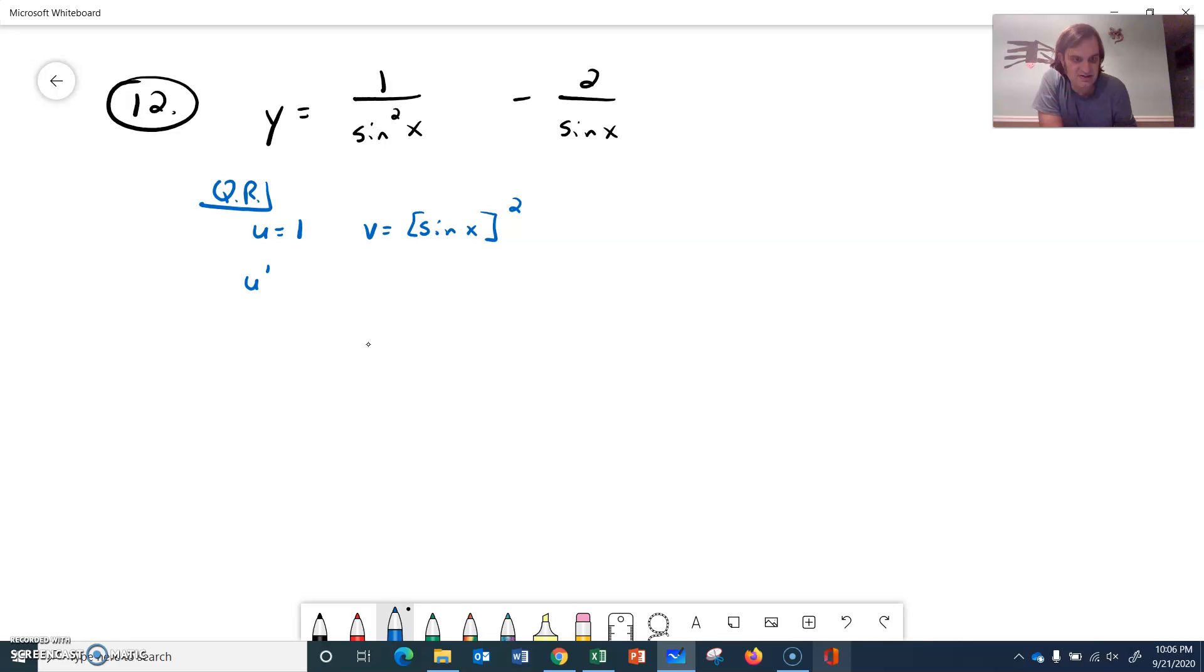But the derivative of 1, of course, is 0. And then the v prime here, we're using the chain rule. So I'll put that in here, chain rule. And my u is the sine. So coming down here, it's a power rule. So 2 comes out front, and then I will have u stay inside the parentheses, and I will have u prime on the outside. So the u is sine of x, and the derivative of sine of x is cosine of x.